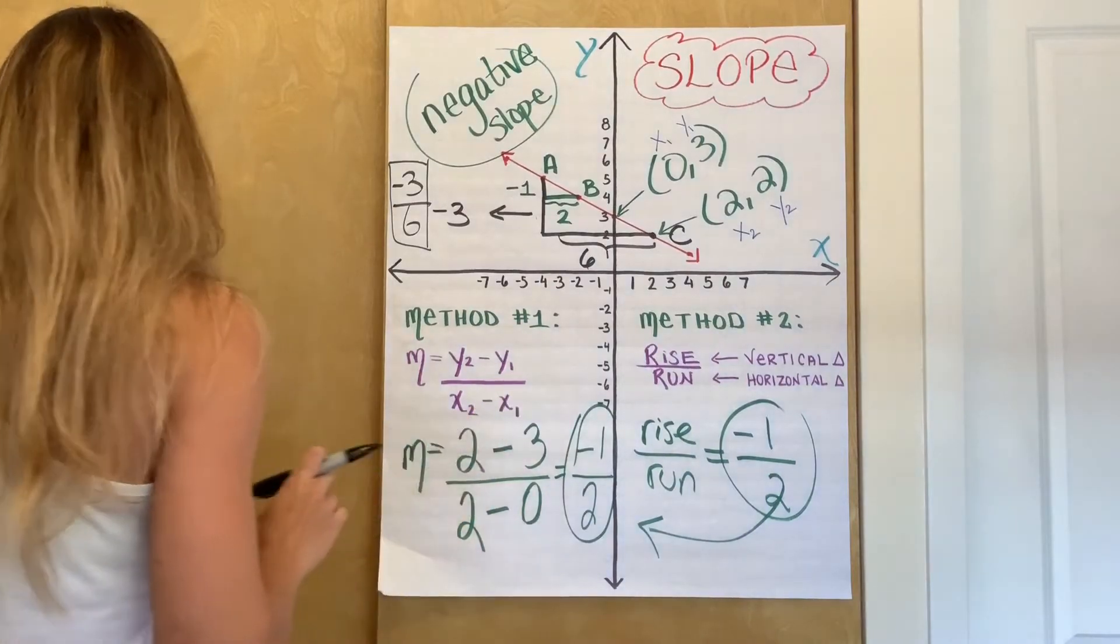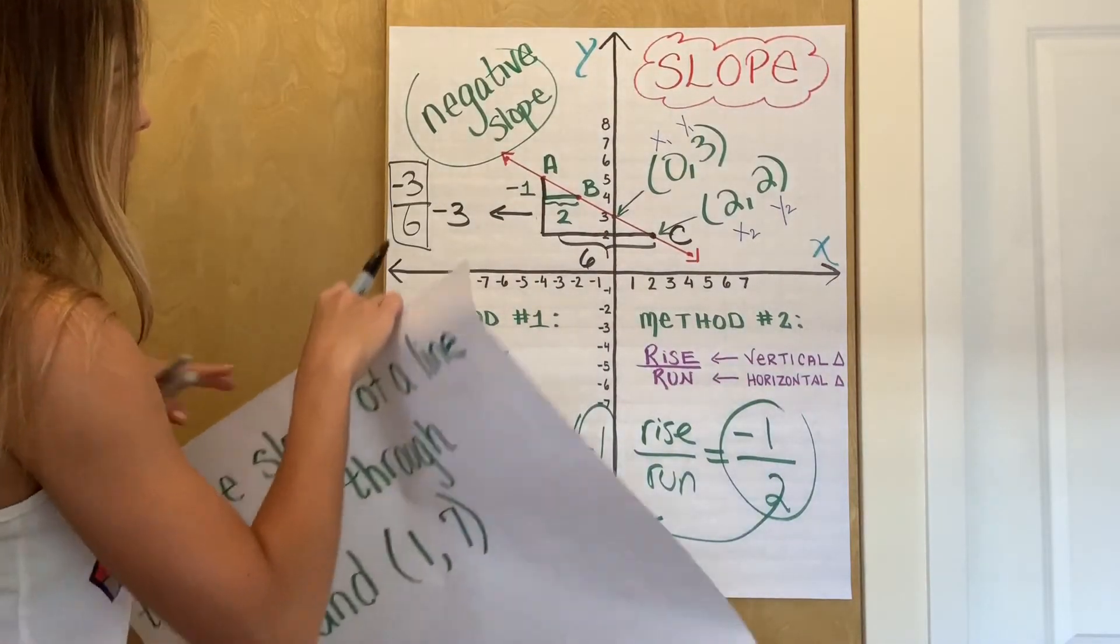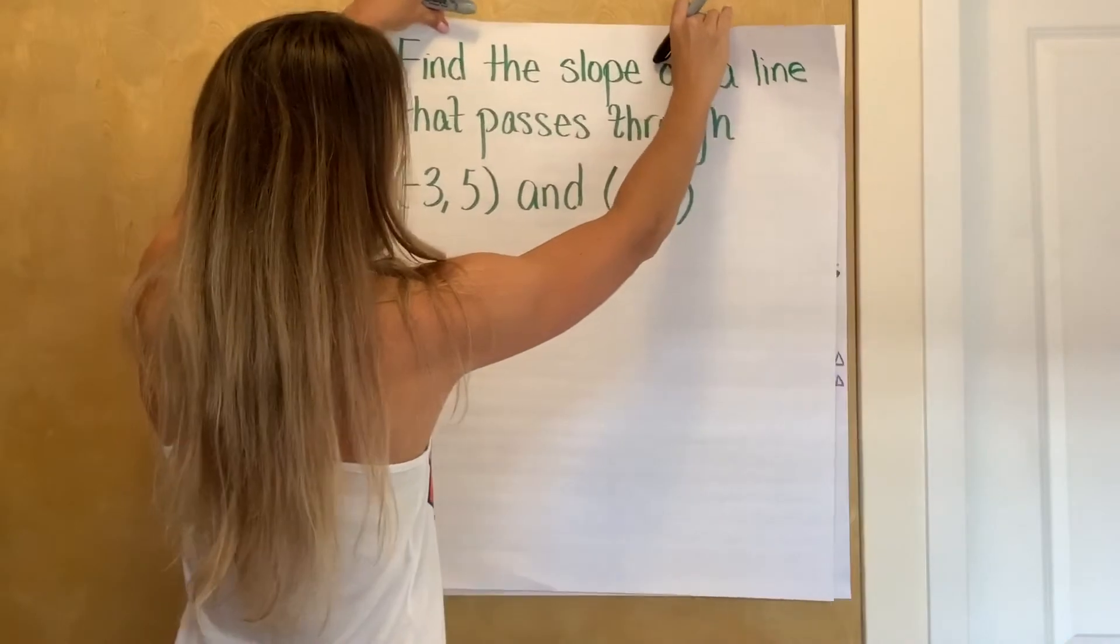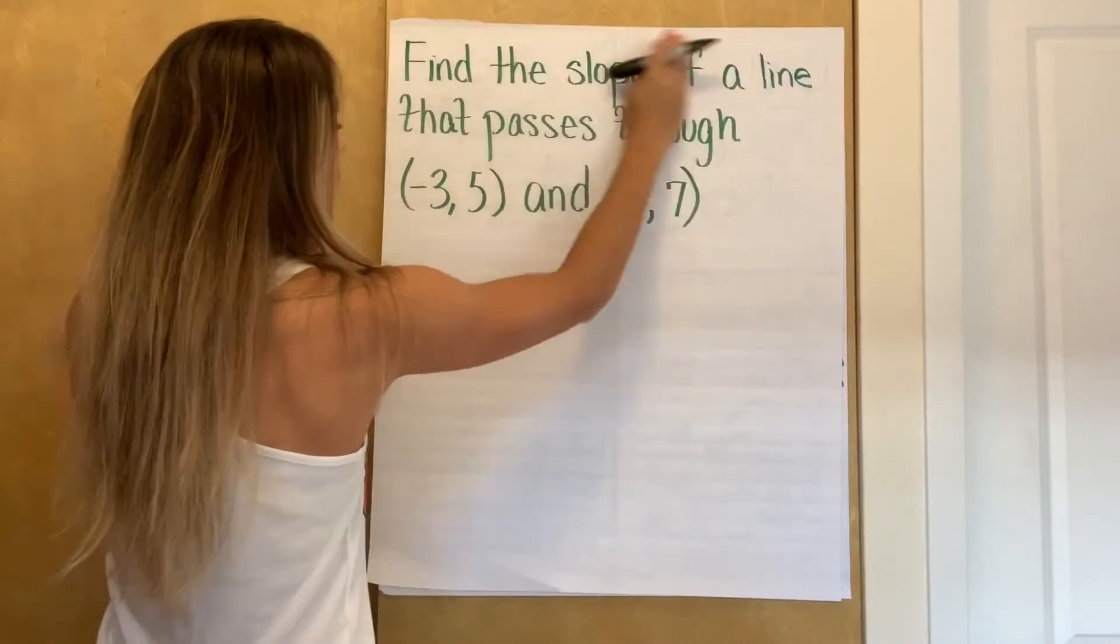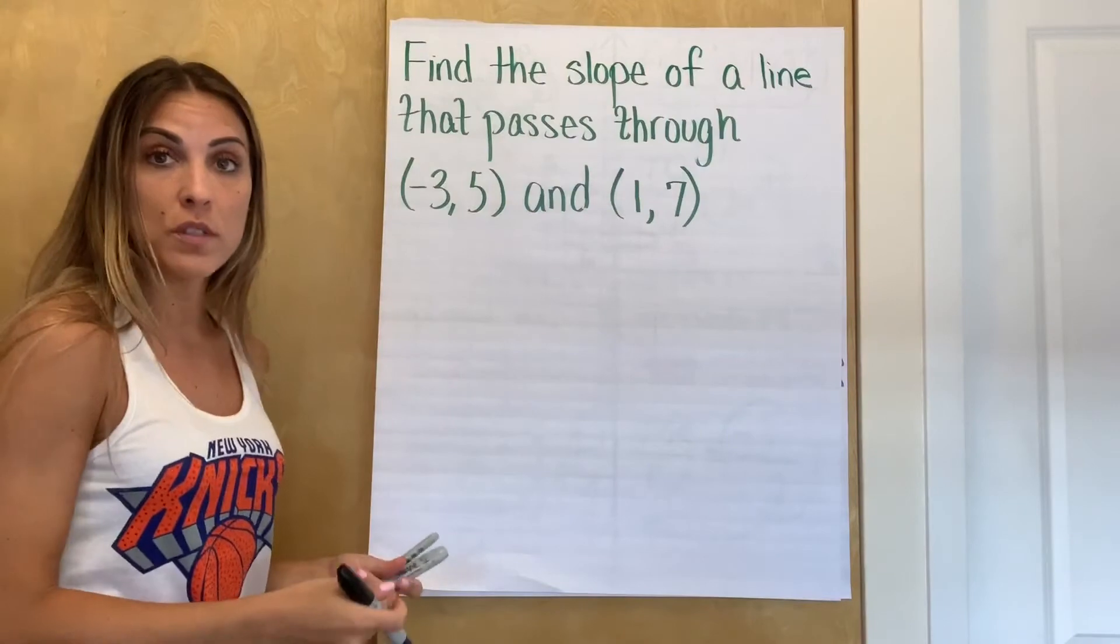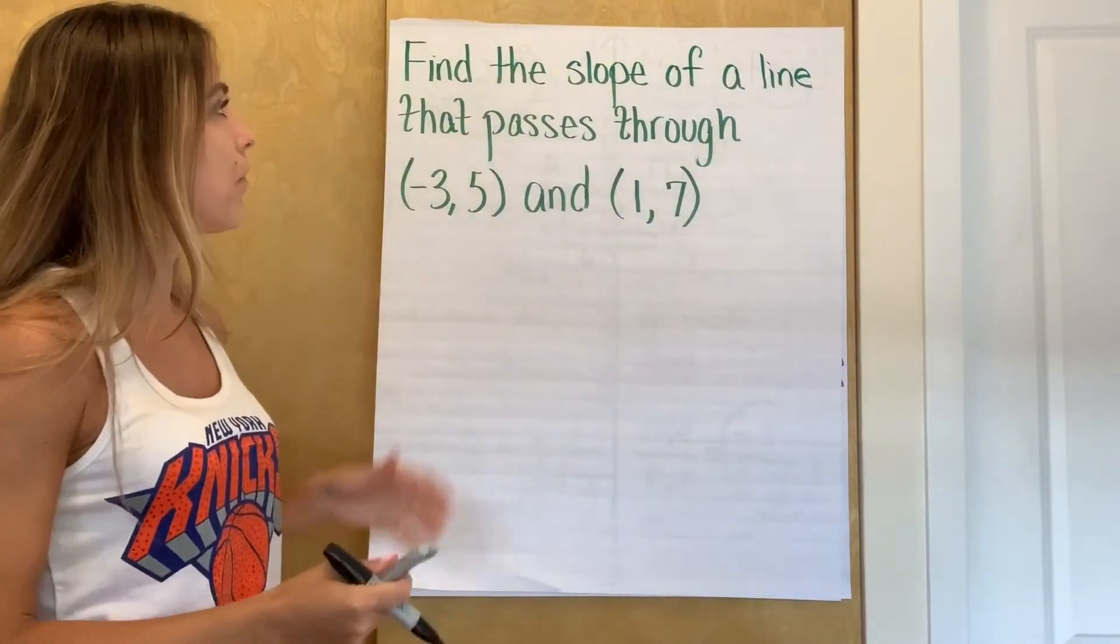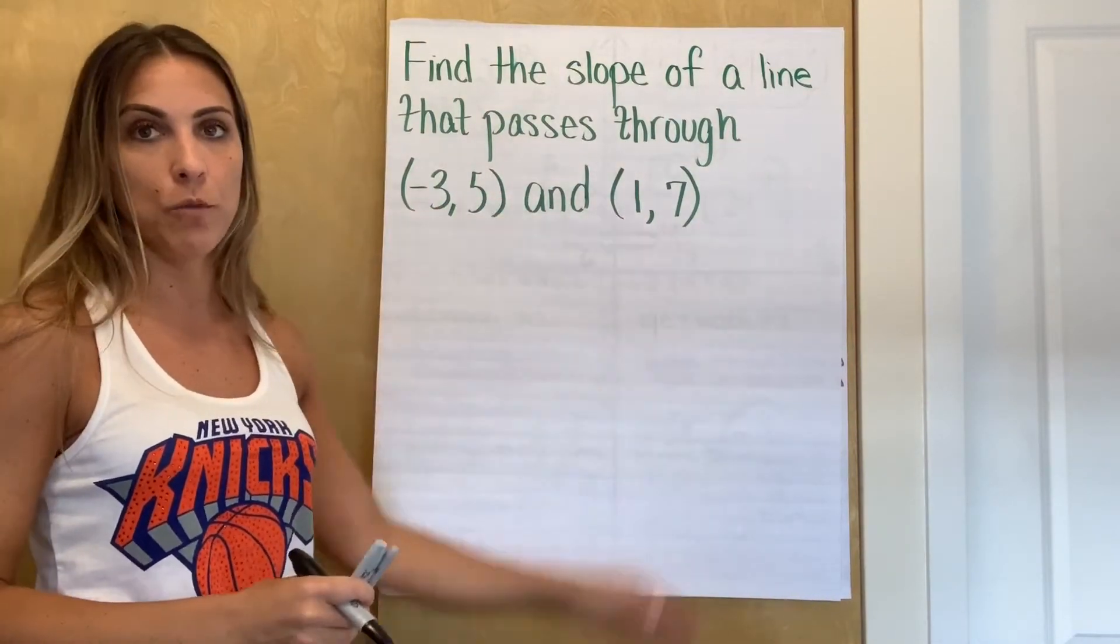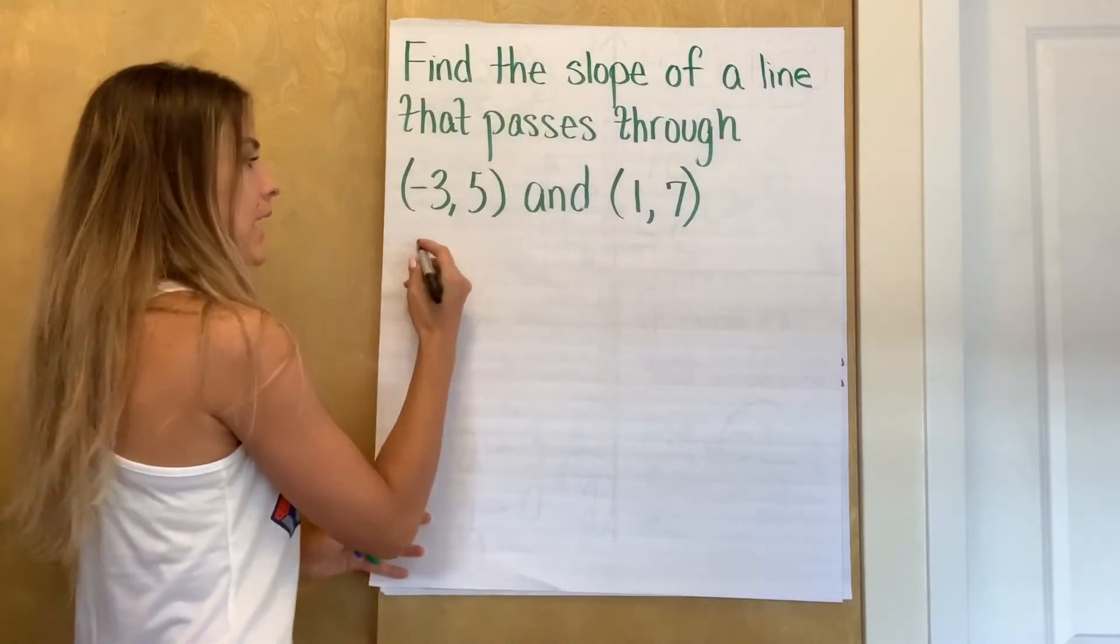Let's do one more example because there's something that may make this a little bit trickier. So this time I'm not giving you a graph. So because I'm not giving you a graph, that means we have to use the formula method. So we're going to find the slope of a line that passes through these two points. There's no graph, so that means I have to know my formula.